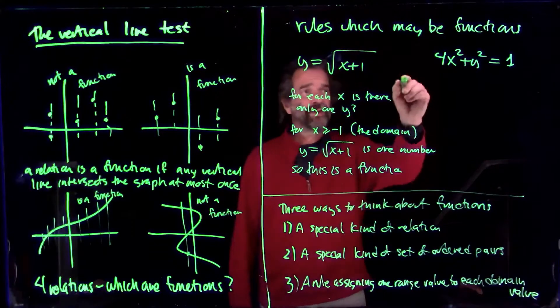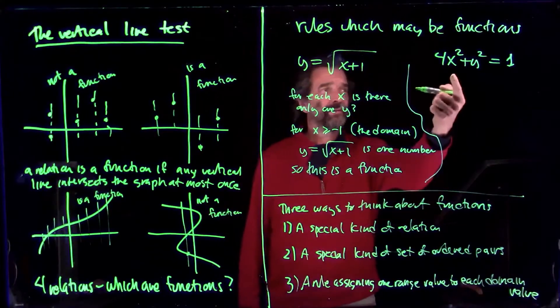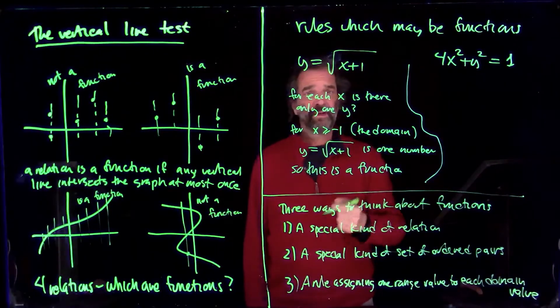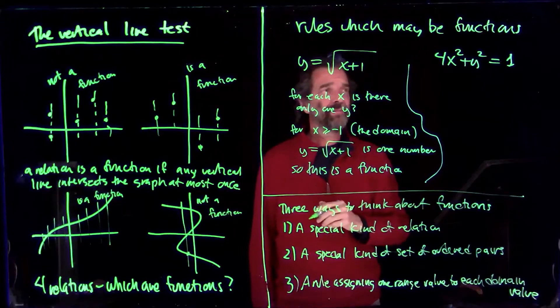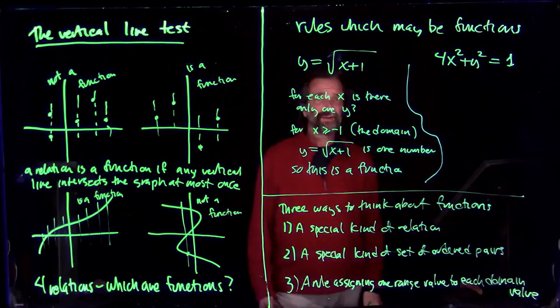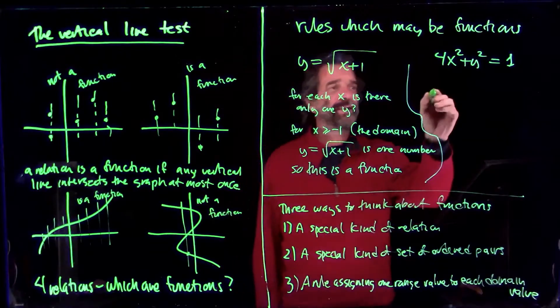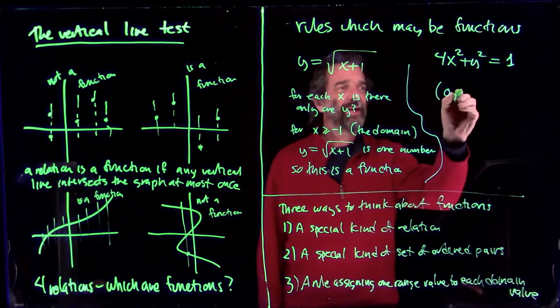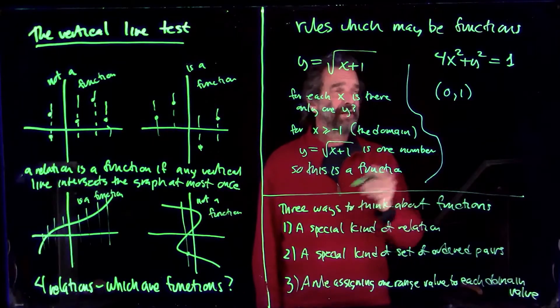We can ask ourselves the same question over here. 4x squared plus y squared is one. For each x, is there only one y? And all we need to do is find some counter examples if we think it's not true. So I'm thinking I'll try this. x is zero, y is one. Solves that equation.